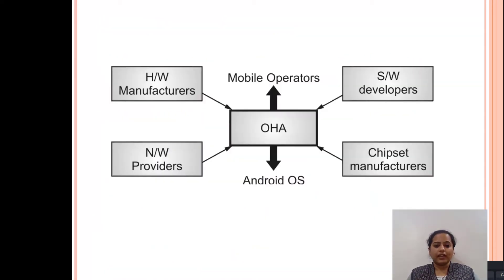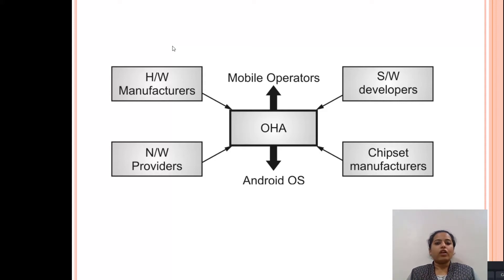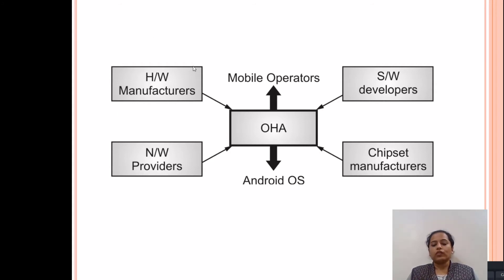Now let us see a basic diagram which explains who the components of OHA are. As you can see in this diagram, we first have the hardware manufacturers — the companies which are into the manufacturing of mobile phones. Android is customized in such a way that every company can customize it according to their needs, because Android is an open source platform. They can customize it according to their hardware devices and differentiate themselves from other companies. So hardware manufacturers are one of the parts of OHA.